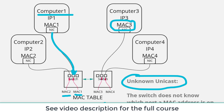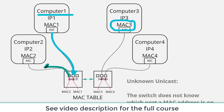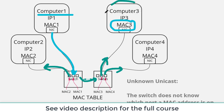The switch has a frame for a certain destination MAC but doesn't know where to send it. In the case of an unknown unicast, the switch responds by flooding the frame out every single port, including sending it to the other switch, attempting to discover which port MAC address three is reachable through. When a response comes back from the destination computer and arrives at the switch, the switch sees the return traffic coming through a certain port and updates its MAC address table to reflect that MAC is reachable through that port. That's an unknown unicast.